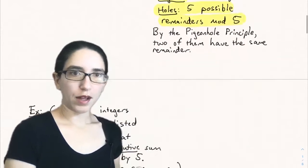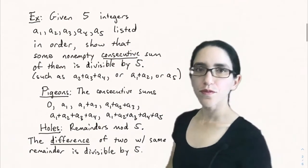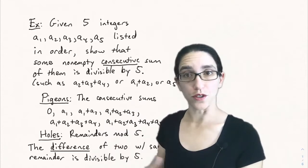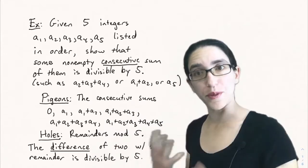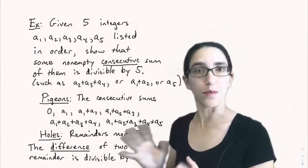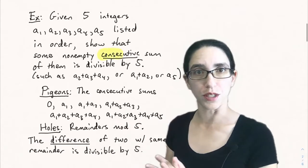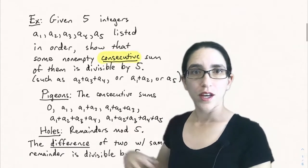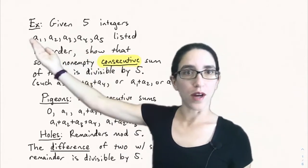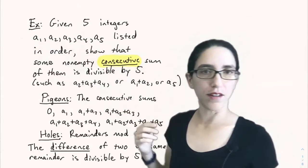Now let's look at a different example where it's not as obvious what the pigeons and holes are. Sometimes you have to be creative and figure out what are the pigeons and what are the holes to make the pigeonhole principle apply. Say you have five integers listed in order a1 through a5.